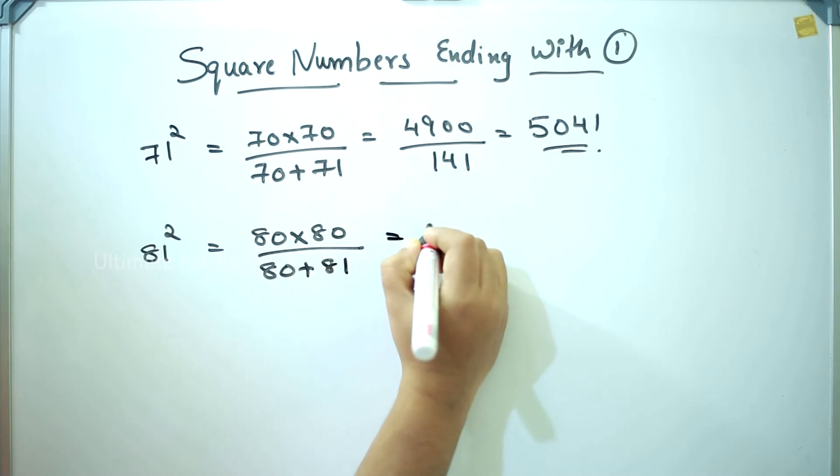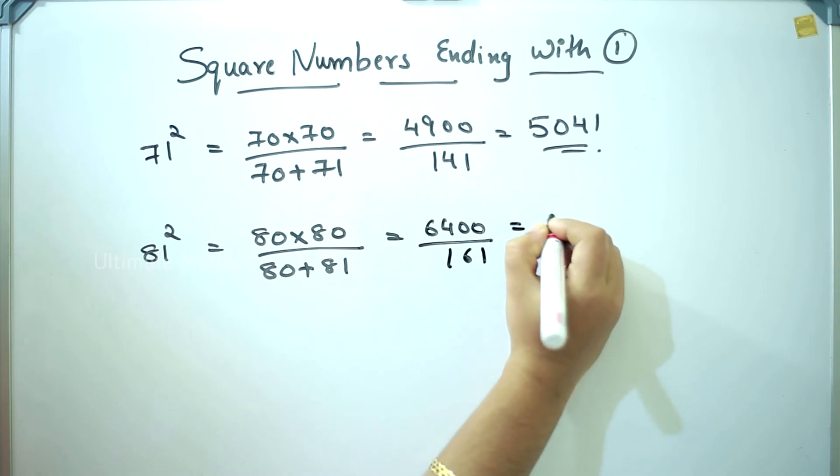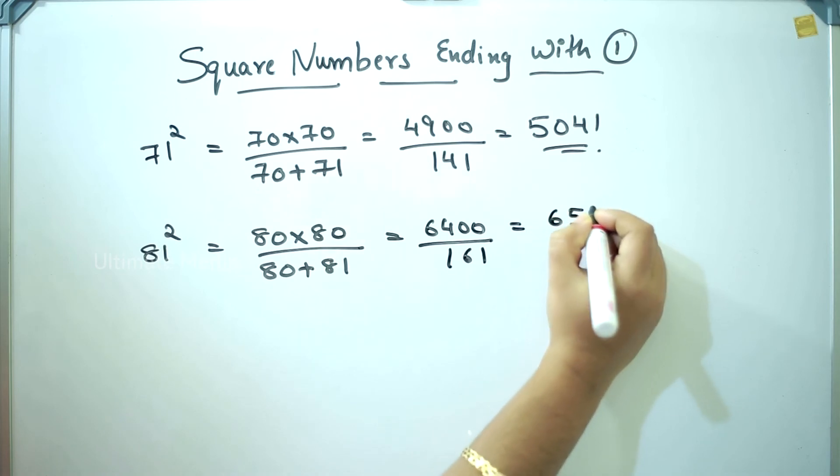81 square: 80 into 80 divided by 161. Answer is 6561.